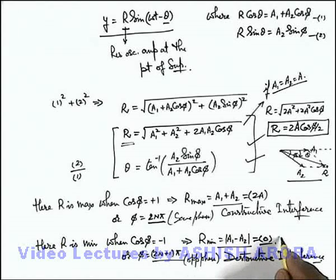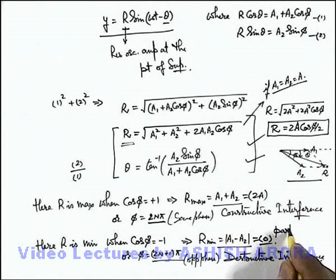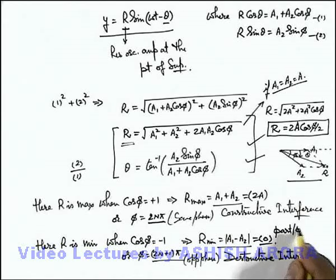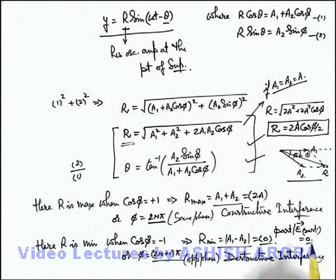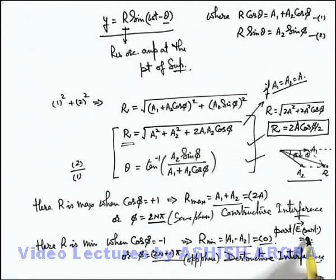Zero amplitude of oscillation means the particle or electric field vector will be at rest — the displacement at the point of superposition will remain zero.